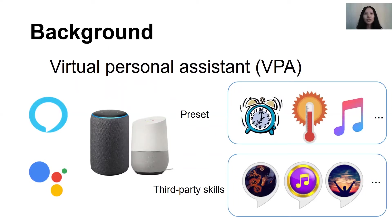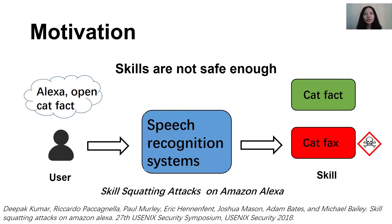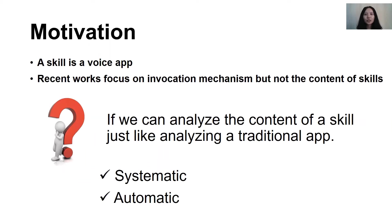However, skills are not safe enough. According to recent studies, attackers can create skills that route users' requests to malicious skills without users' consent by creating skills with similar names to benign ones — for example, 'catfacts' and 'cat facts'. As we know, a skill is a voice app, and recent studies are mainly focused on the invocation mechanism of skills. So we want to know if we can analyze the content of a skill systematically and automatically, just like analyzing a traditional app.